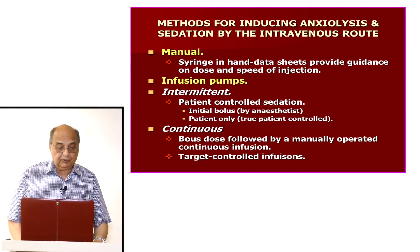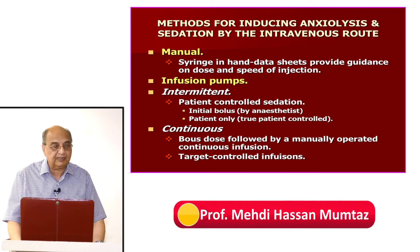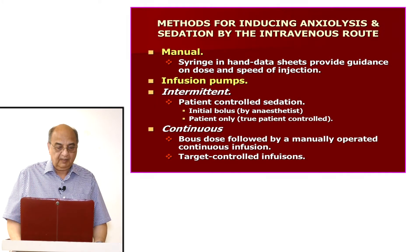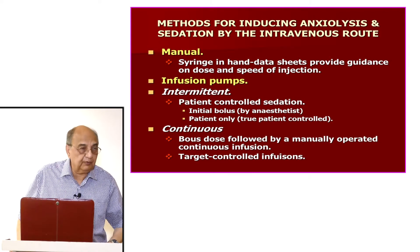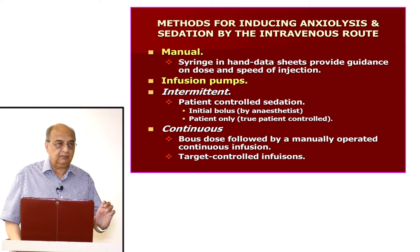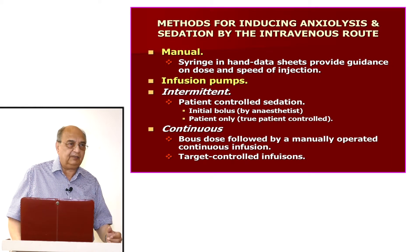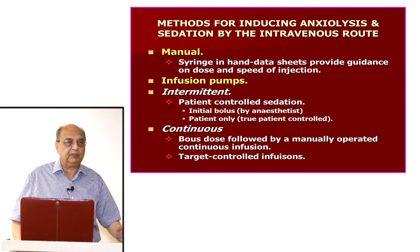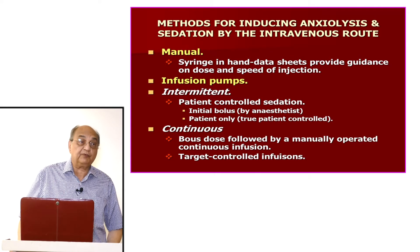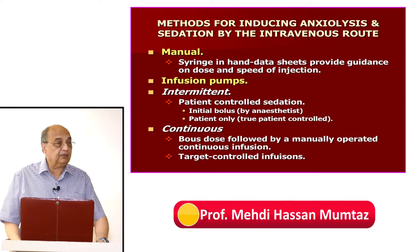For continuous infusion, a bolus dose should be followed by a manually operated continuous infusion. There are also target-controlled infusions, or TCIs. You set the required drug level on the syringe pump, and it will maintain that level — automatically increasing or decreasing the dose being delivered through the infusion pump.